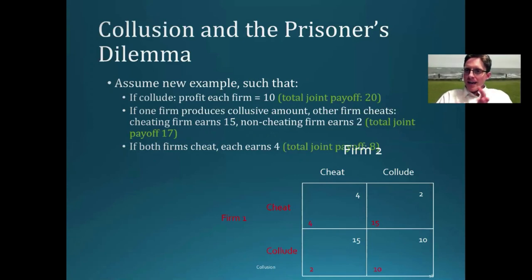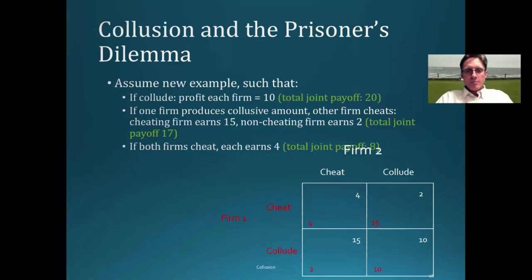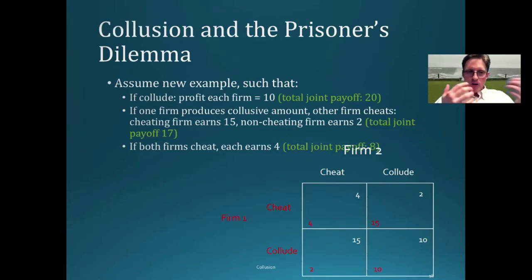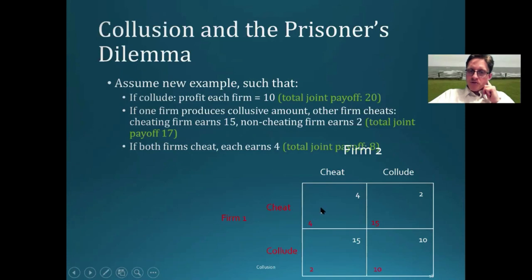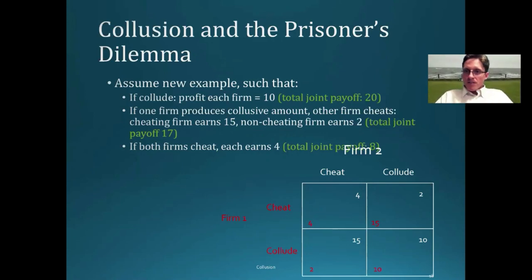Let's think about the prisoner's dilemma game and how it relates to collusion. The basic idea is that collusion — the game of trying to collude — is a prisoner's dilemma game. If two oligopoly firms were to collude, they would both earn higher profits than under normal oligopoly equilibrium. But each firm has a dominant strategy to cheat on the collusive agreement, so they end up with the worst overall payoff. In this payoff matrix, if both cheat they get a payoff of four, but if both collude they get a payoff of ten. If one cheats and the other colludes, the cheating firm gets fifteen while the other gets two. Firms would like to earn monopoly profits, but the dominant strategy to cheat prevents them from doing so.